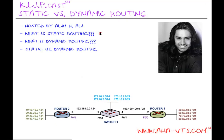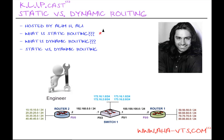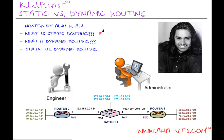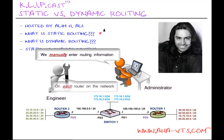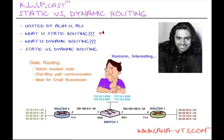Let's talk about static routing. Static routing is an administratively invoked route of one-way path communication, meaning that a network engineer or administrator manually enters the routing information into each router in order to move traffic onto or across the network. Static routes can be a very effective method for small enterprises and simple networks with infrequent changes. The administrative distance, or trustworthiness, of these types of routes is one.